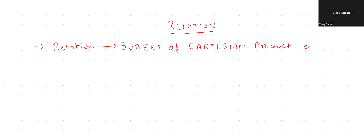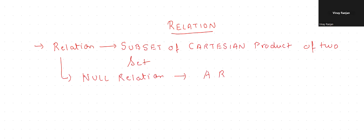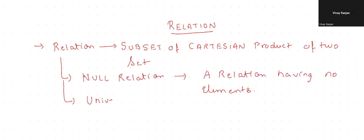The Cartesian product is of two sets, and the sets can be the same set or different sets. Then we will learn about the types of relations — like what is a null relation. A null relation is a relation having no elements.